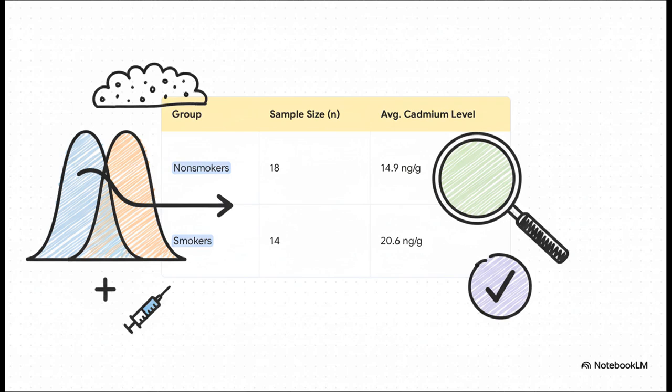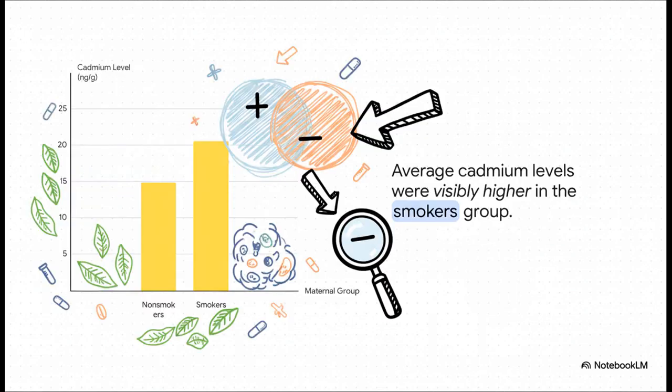Check this out. In a pretty fascinating study, researchers measured cadmium levels in the placentas of new mothers. They found the average level in the group of 14 smokers was 20.6. But for the 18 non-smokers, the average was way lower, at 14.9. I mean, visually, the difference is just crystal clear. It absolutely looks like smokers have higher levels.